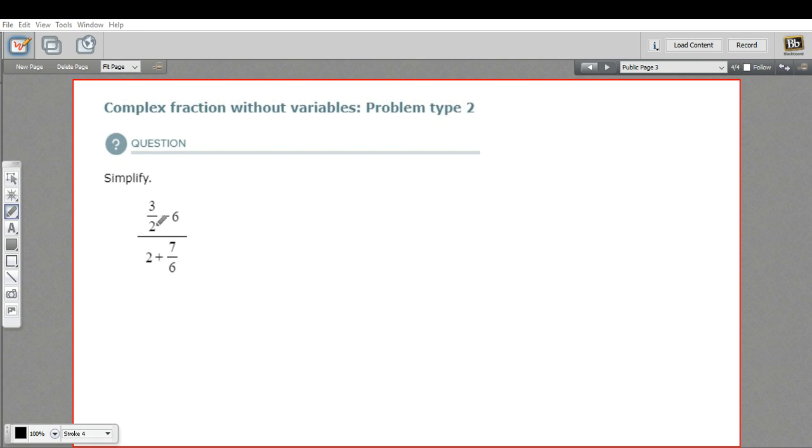So I've got 3 halves minus 6. If I convert 6 into halves, that would be minus 12 halves, because 12 halves equals 6. And then I can do that problem, 3 minus 12 is negative 9 halves. So that's what's on the top of my fraction.